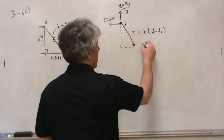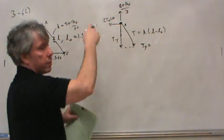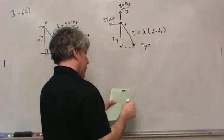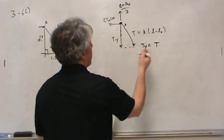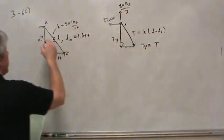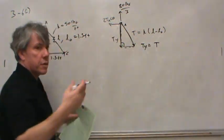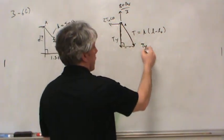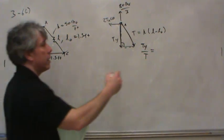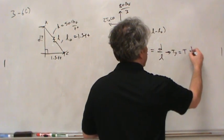The vertical component of this tension is all I care about — the horizontal component cancels. We have a geometry triangle where the vertical side is D and the hypotenuse is L. The force triangle and the geometry triangle are similar triangles, so TY/T = D/L. Therefore TY = T × D/L.